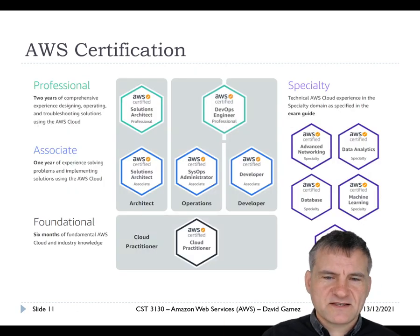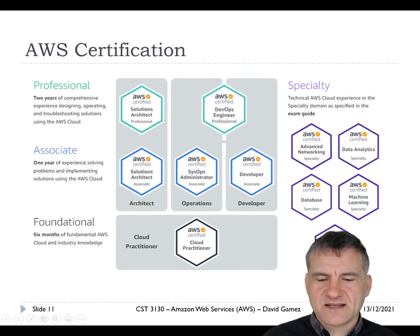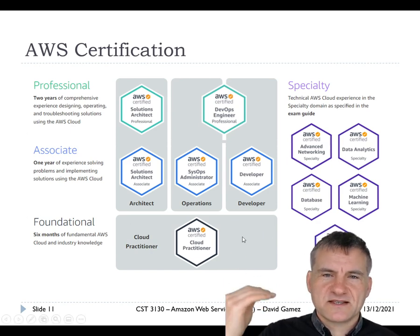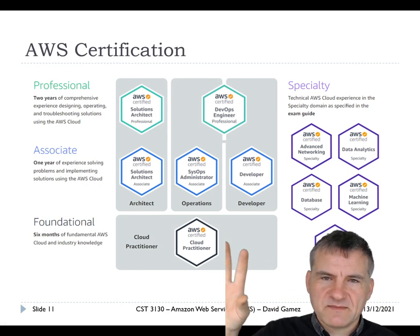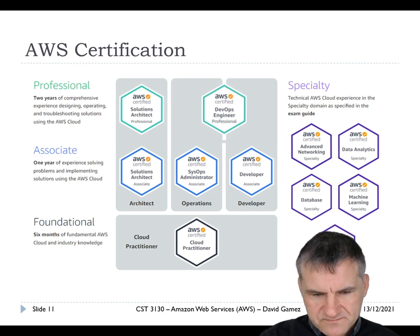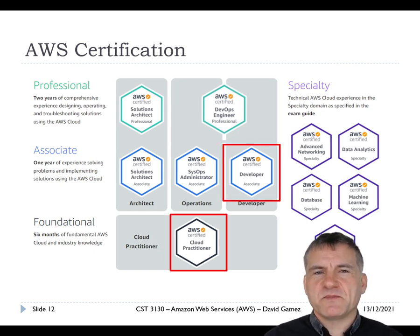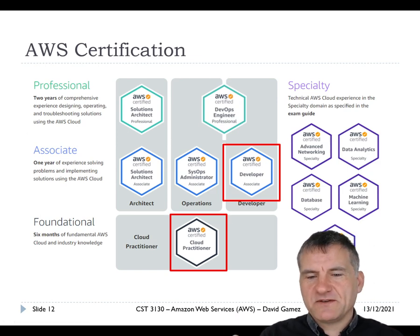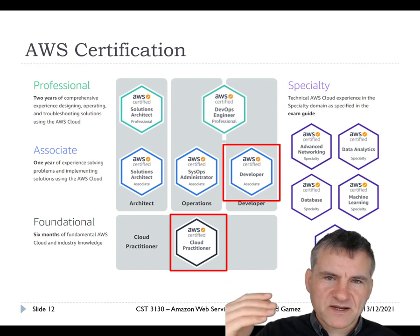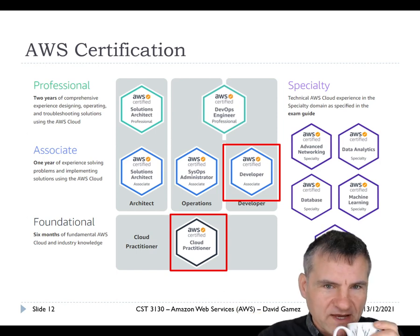AWS offers different certification levels: foundational, associate, and specializations in areas like machine learning and databases. From a developer perspective, you need the Cloud Practitioner certificate before the more advanced ones, and then you could pursue the Developer certificate, which is most closely linked to what we're doing in this course.